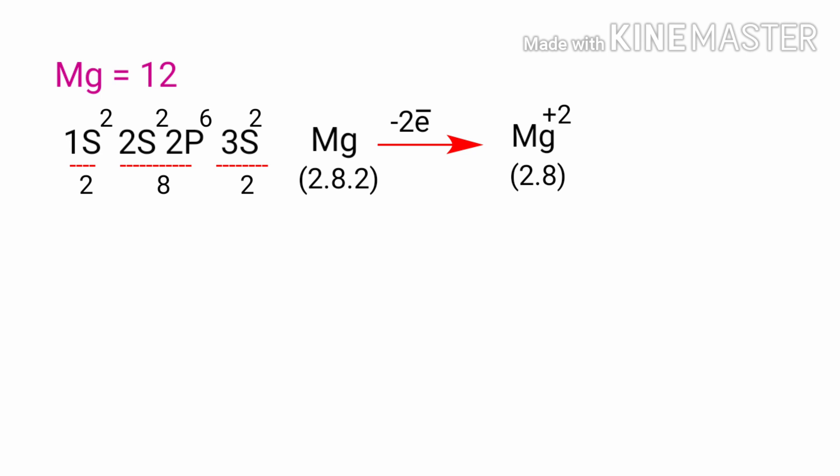If magnesium loses two electrons, it now has 12 protons, 12 neutrons and only 10 electrons, leaving it with an overall charge of plus two. It is now referred to as a magnesium ion.